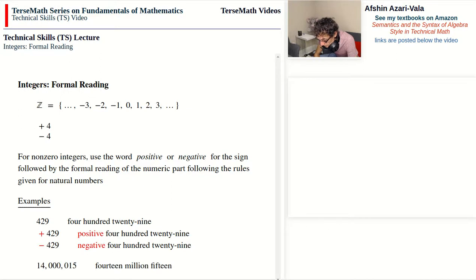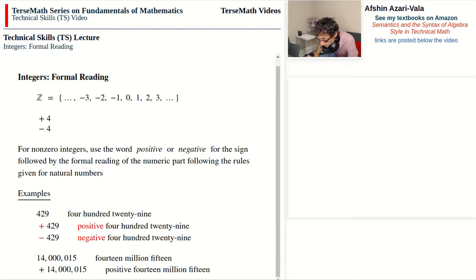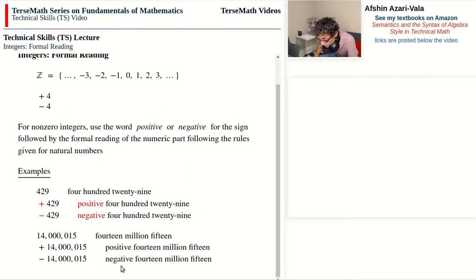Here is another example. The natural number 14 million 15. You notice that I am not reading the triad that consists of zeros and I'm not using the word 'and'. Now if I put the plus sign before it then it becomes positive 14 million 15. And if I put the negative sign before it then it becomes negative 14 million 15.